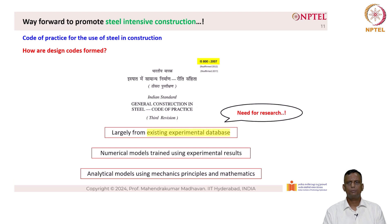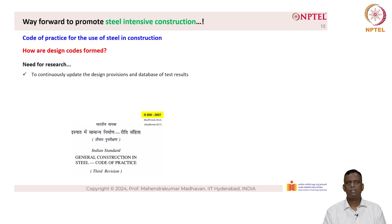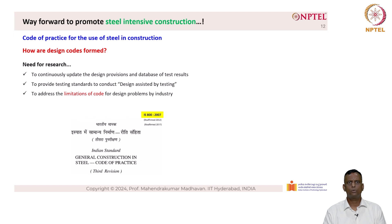The existing experimental database is in some sense outdated, as tests were carried out for low-grade steel such as 250 MPa, and this needs updated research. The need for research is to continuously update design provisions and the database of test results, to provide testing standards to conduct design assisted by testing, and to address the limitations of codes for design problems faced by industry. The code is a minimum requirement, but real-life problems may be much more complicated, requiring a mechanism for design assisted by testing.